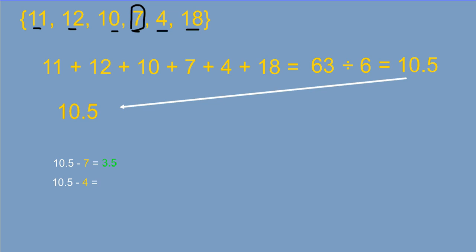And we get 3.5. Then we'll do the same thing with another number from the data set. So we're using 4 this time. When we subtract that, the distance is 6.5 units from the mean. Next, we're using the number 10. And when we subtract that, it's 0.5 units from the mean.